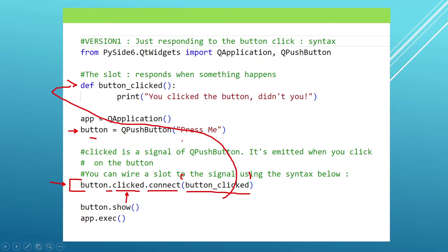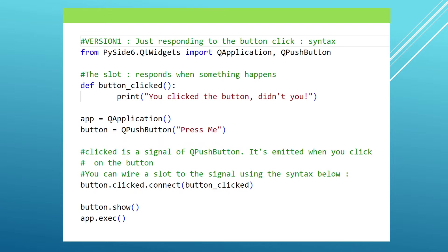We are connecting a slot — a method — that is going to respond when this button is clicked. Some of you must be asking: how did you know that we have this clicked signal on our button? This is another instance of where you need to use the documentation.